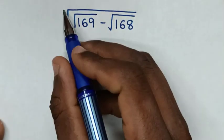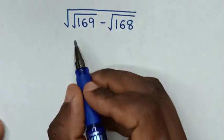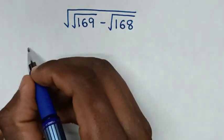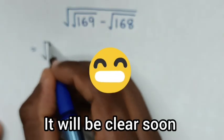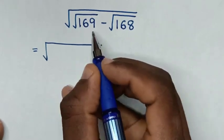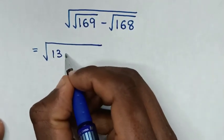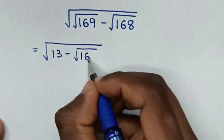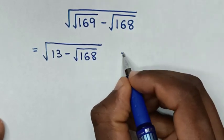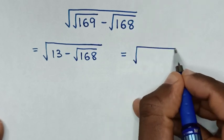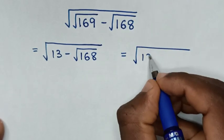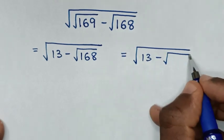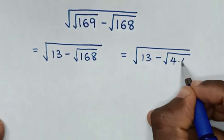Hello. How to solve square root of square root of 169 minus square root of 168? It will be equal to square root of — square root of 169 is 13 — then minus the square root of 168. Then it will be equal to square root of 13 minus square root of 168, which is the same as square root of 4 times 42.